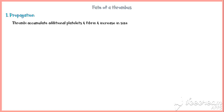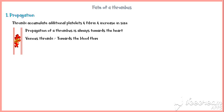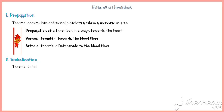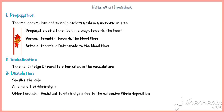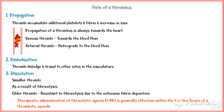The fate of a thrombus includes propagation, where the thrombus accumulates additional platelets and fibrin to increase in size. Propagation of a thrombus is always towards the heart — venous thrombi propagate with the blood flow, whereas arterial thrombi propagate retrograde to blood flow. Another fate is embolization, where thrombi dislodge and travel to other sites in the vasculature. If the thrombus is relatively smaller, it may undergo dissolution via fibrinolysis. However, older thrombi become resistant to fibrinolysis due to extensive fibrin deposition, so fibrinolytic agents like tissue plasminogen activator are generally effective only within the first few hours of a thrombotic episode.